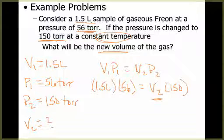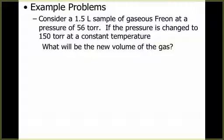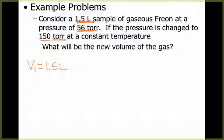For the Boyle's law example: we have a 1.5-liter sample of gaseous freon at a pressure of 56 torr. If the pressure is changed to 150 torr at constant temperature, what is the new volume of the gas? Whenever you do these gas law problems, go through and make a list of what they give you and what they're asking you to find. My first variable is V1 = 1.5 liters. The second piece of information is a pressure — P1 = 56 torr — because we just learned that torr is a pressure measurement.